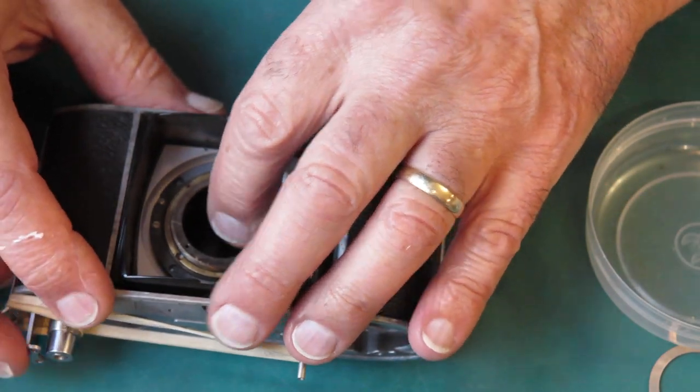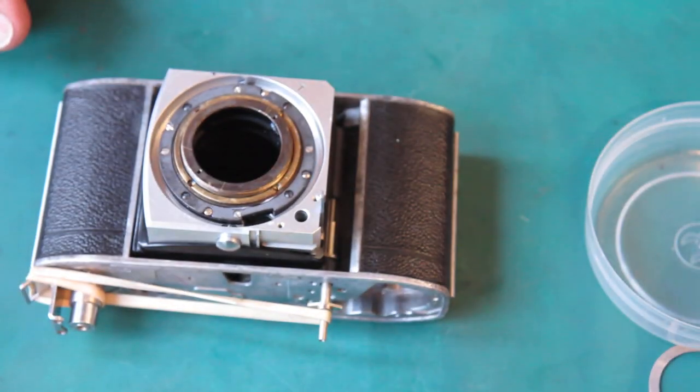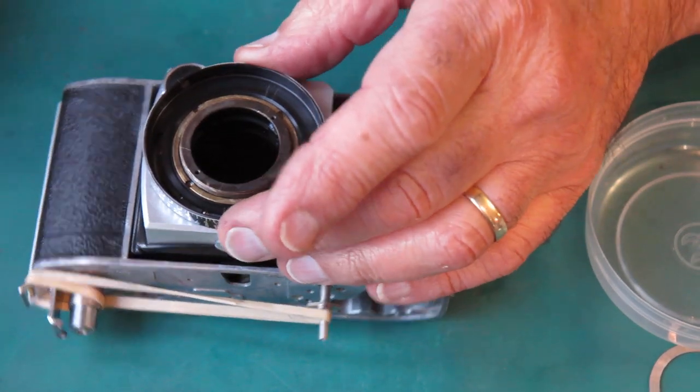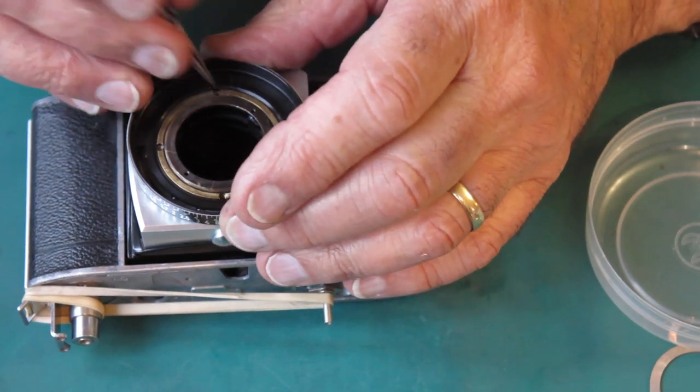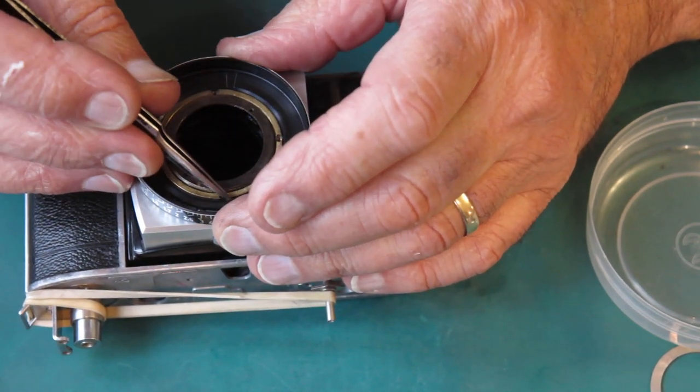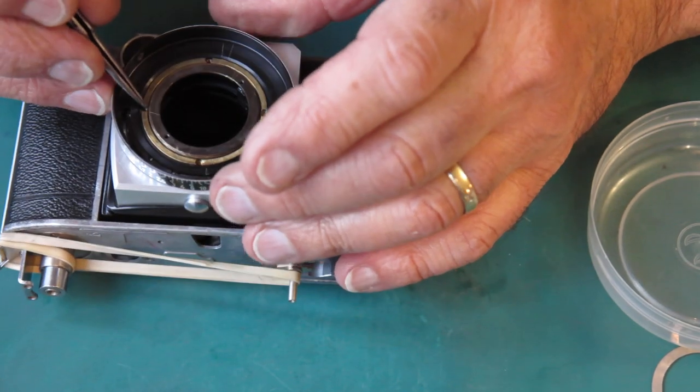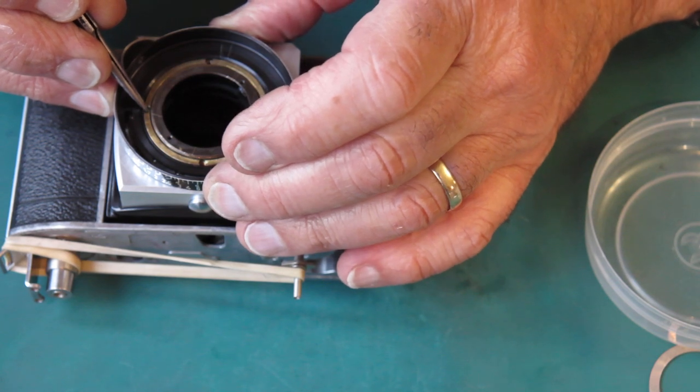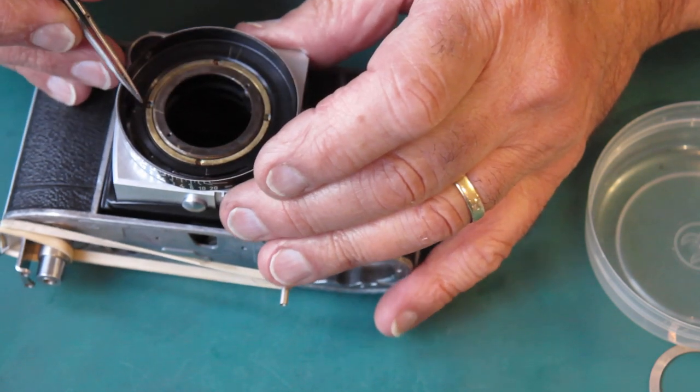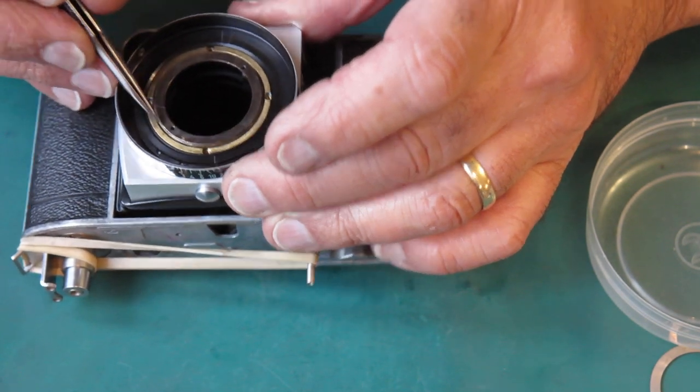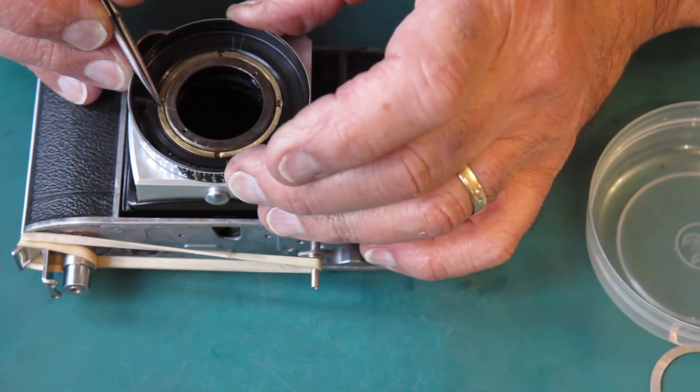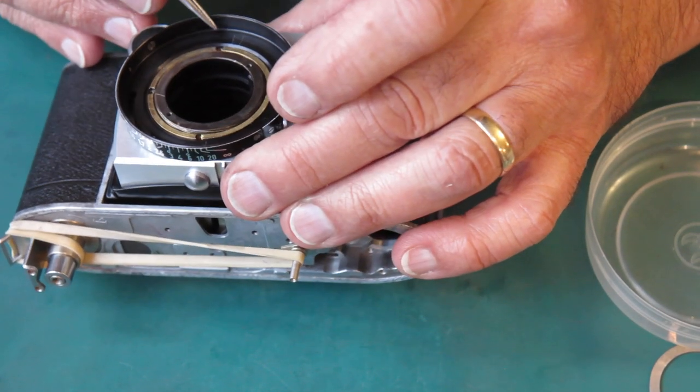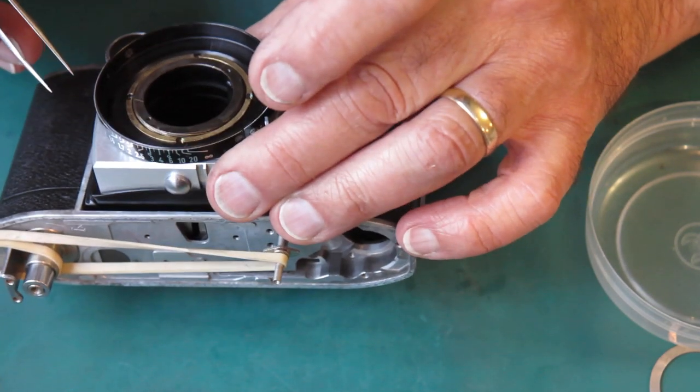All right, that's all done. Focus scale ring—we've got our alignment marks on the outer helical here and here, so I can see where they're gonna go. Let's get those lined up. You can usually see little marks where the screw heads bit into it previously.